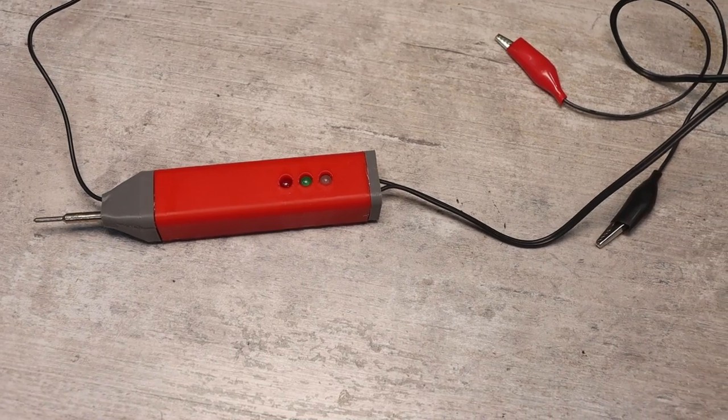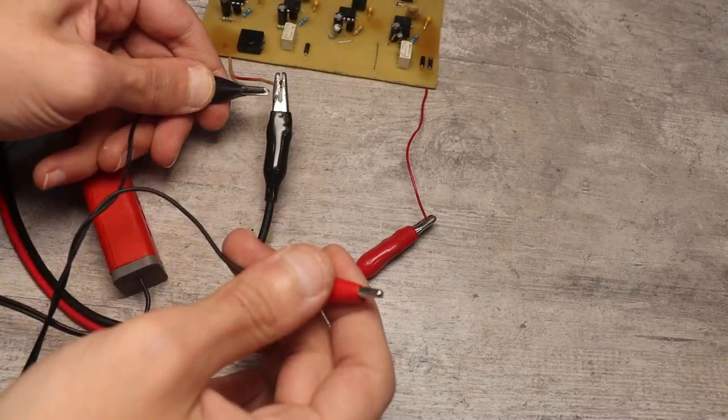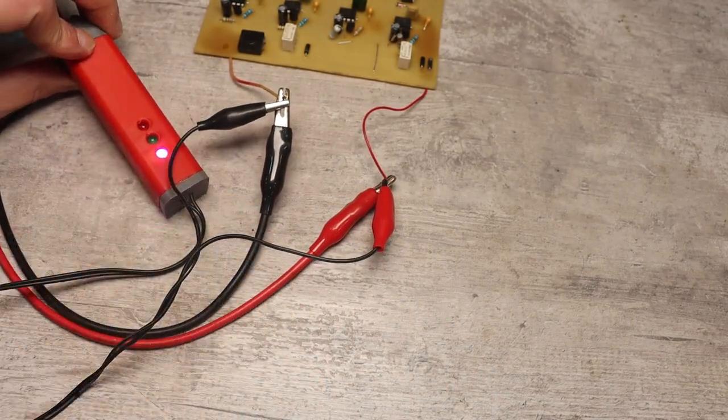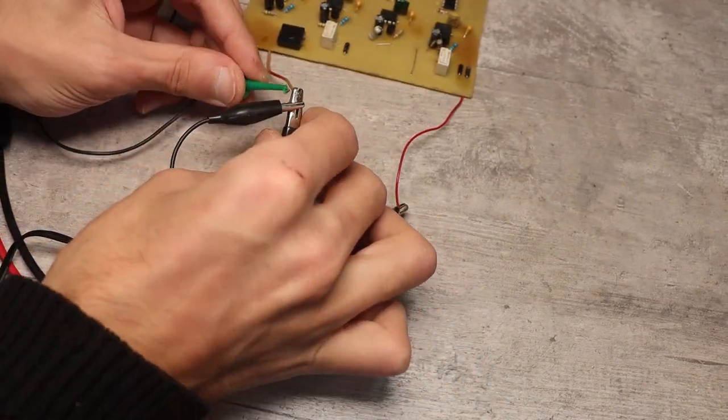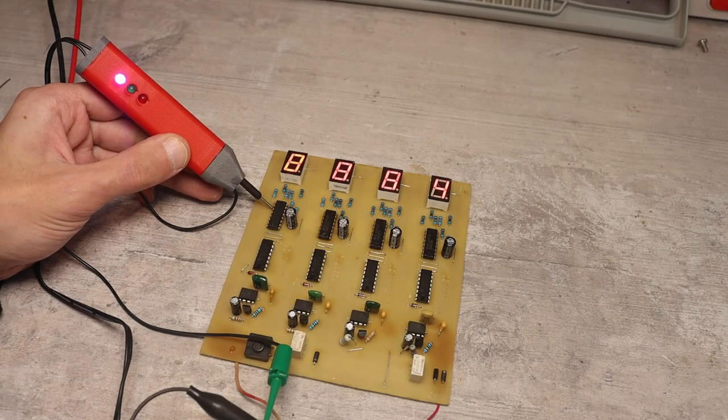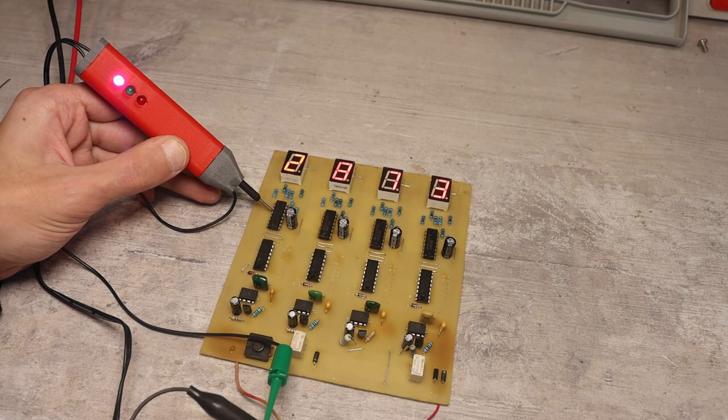Working is very easy. We connect the power wires to the source, for example, the power outputs of the tested microcircuit or board. We connect the minus measuring wire to the power minus, and touch the positive measuring probe to the points where you want to check the signal.